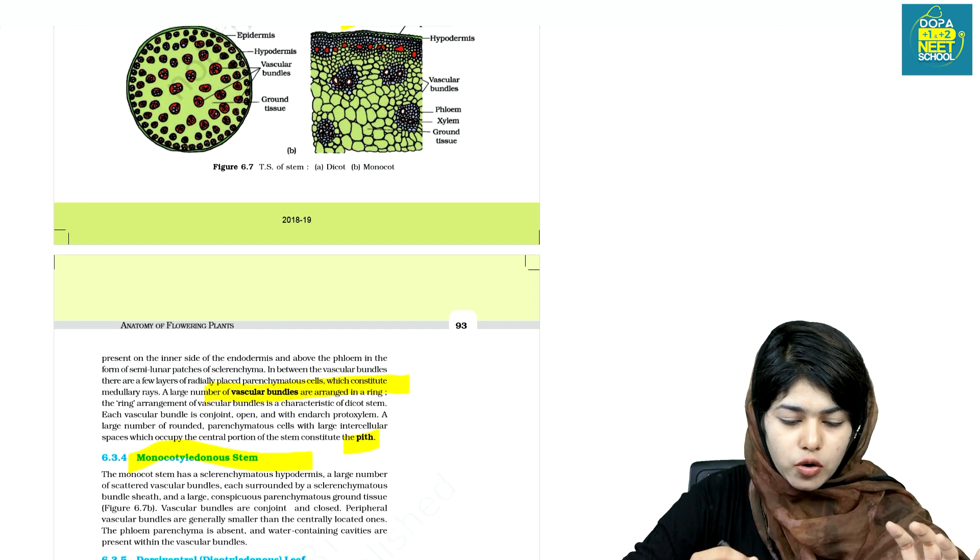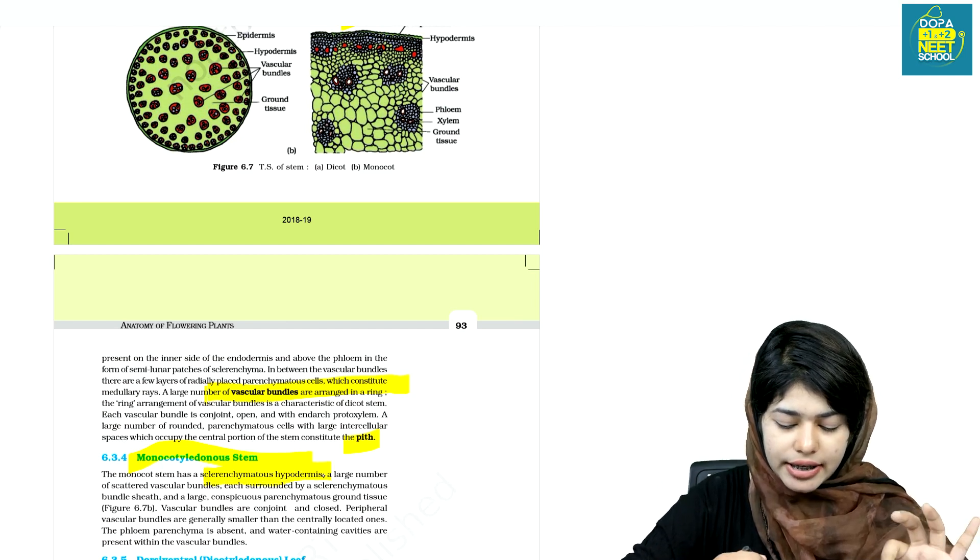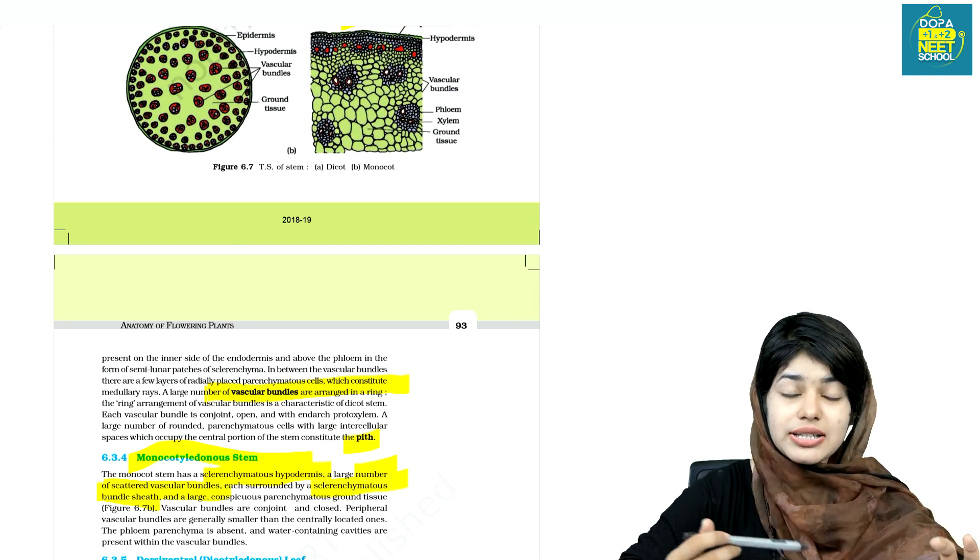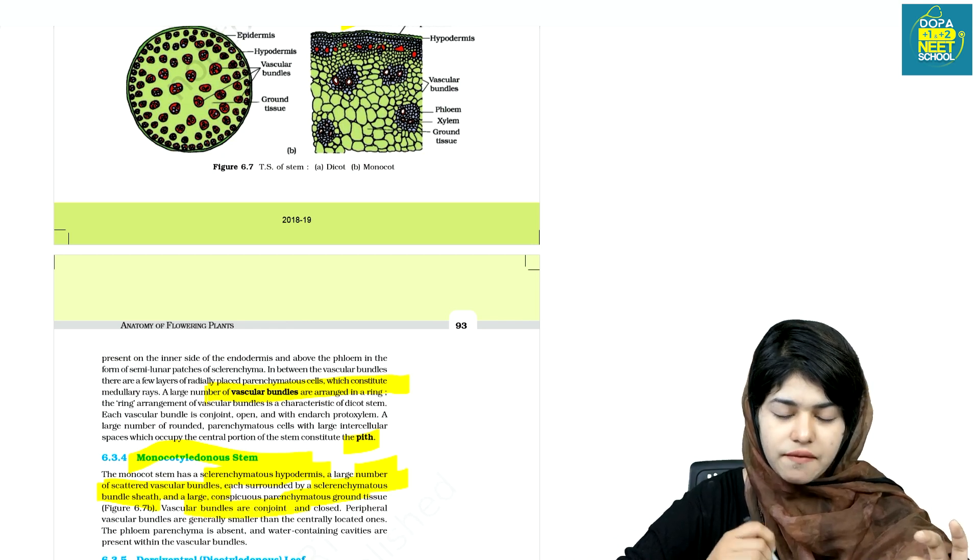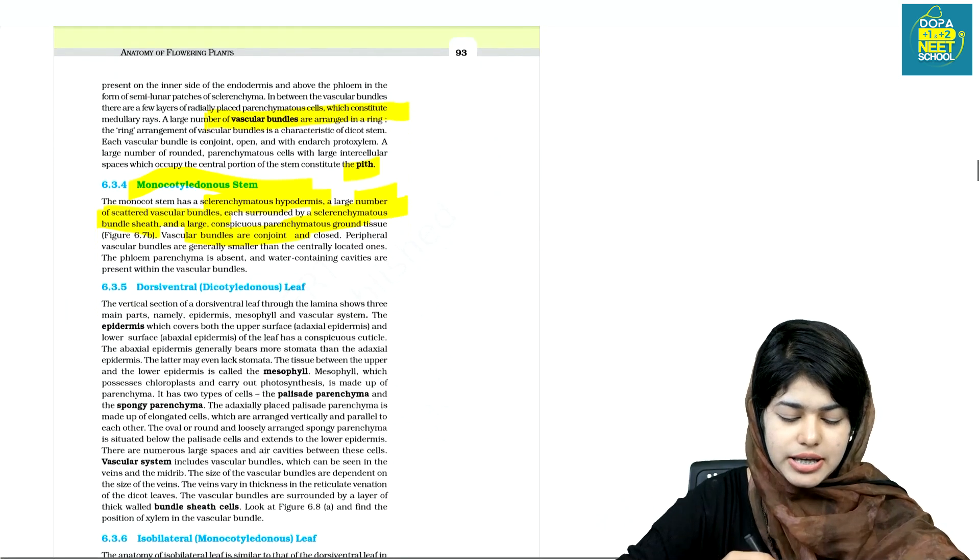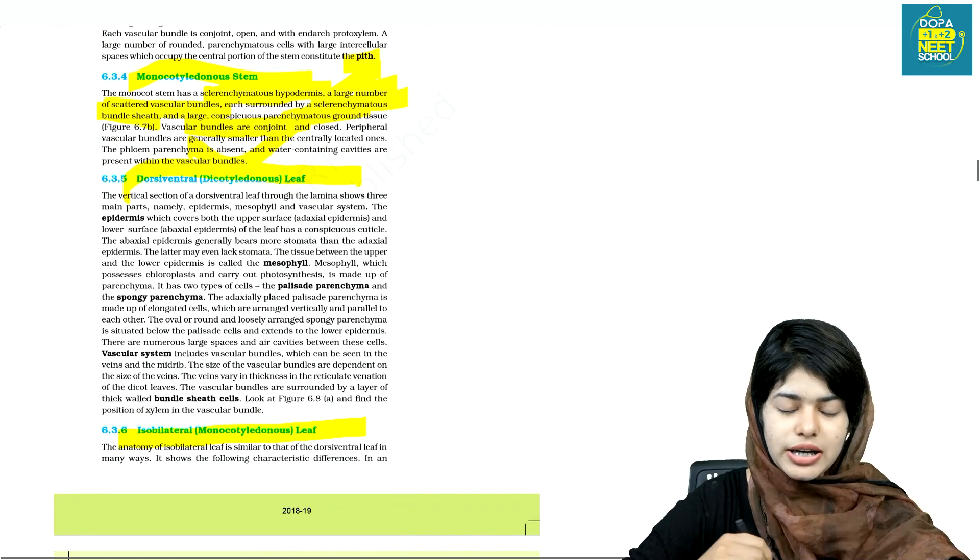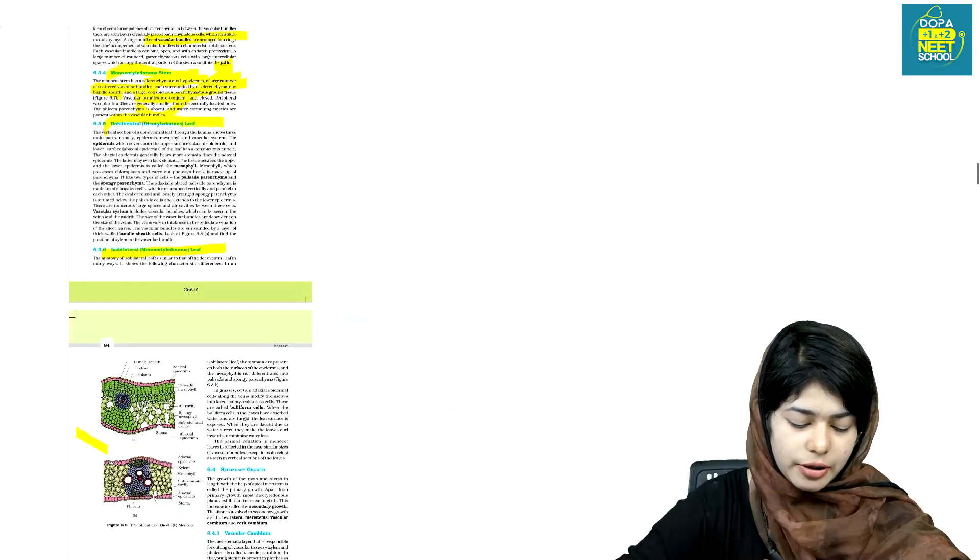Let's talk about monocot stem. We have a hypodermis. We have a vascular bundle. We have a bundle. We have a parenchyma cells. We have a conjoint and closed. We have a conjoint. We have to talk about it. We have a dorsal, ventral, and isobilateral. We have a dicots and monocots.